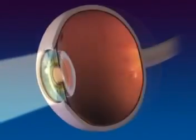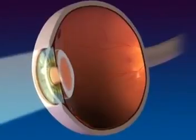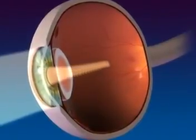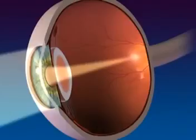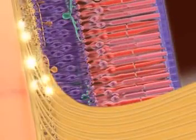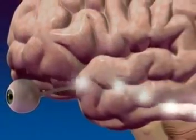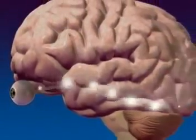Light rays enter the eye through the cornea, pupil, and lens, where the light rays are bent or refracted to focus them on the rods and cones, which transmit the stimulus to the optic nerve and then to the occipital lobe of the brain for interpretation.